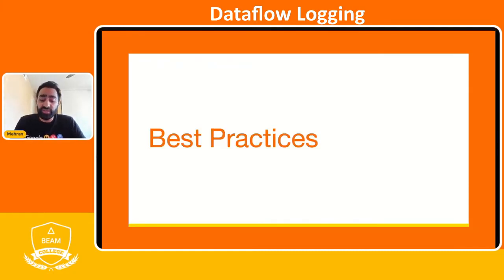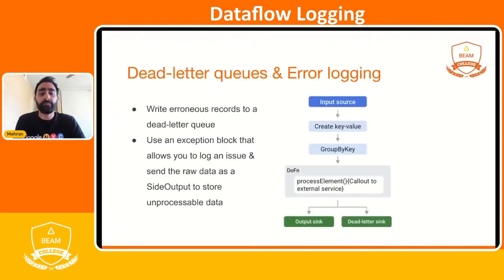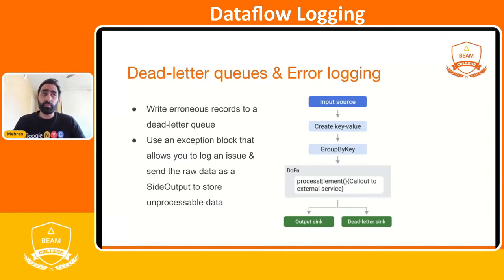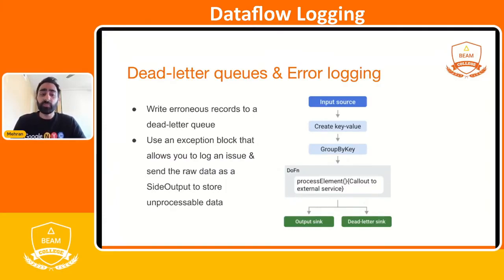Before the demo, let's look at some best practices. One thing that causes customer pipelines to go wrong is when corrupted data causes the entire pipeline to fail. When a malformed record shows up and your pipeline can't process it, we recommend writing it to a dead letter sink — that means writing erroneous records to a dead letter queue, using an exception block that logs an issue and sends the raw data to a sink to store unprocessable data for offline analysis.